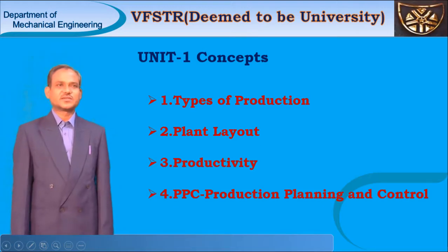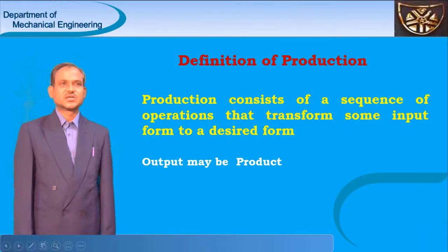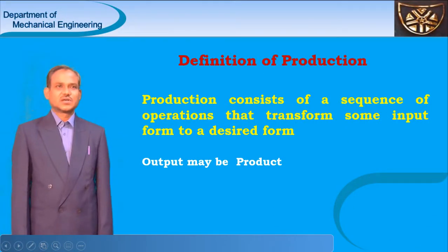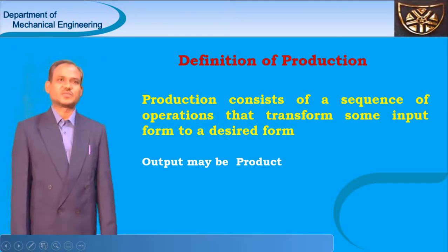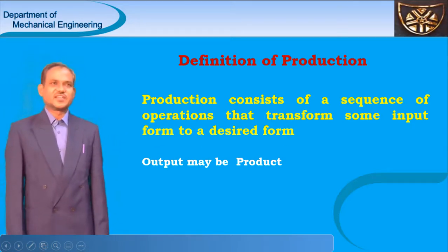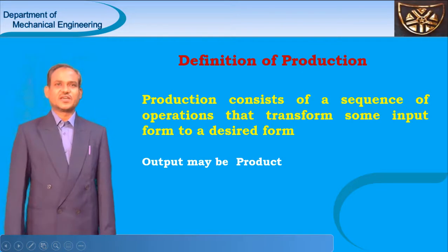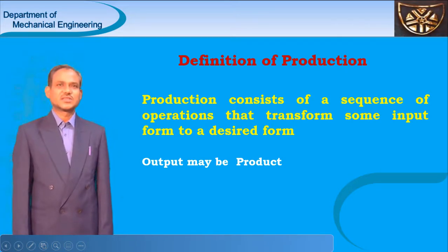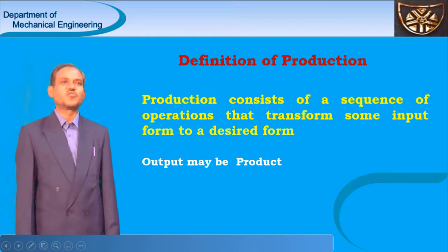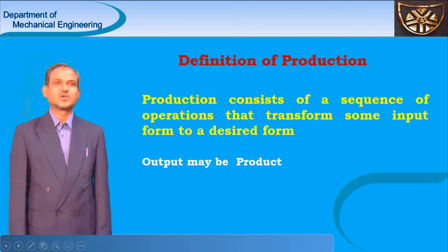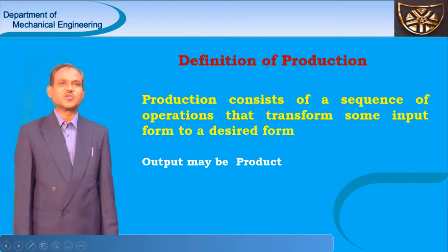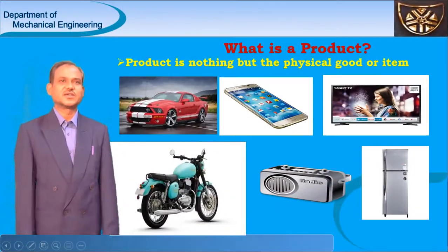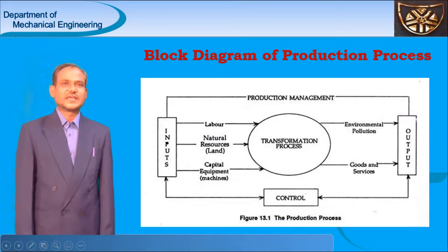First of all, I would like to explain about production or manufacturing. What do you mean by production or manufacturing? As per the definition, production consists of a sequence of operations that transforms some input form to a desired form known as output. The output may be a product — the physically produced item. Any production process can be considered as a transformation process.